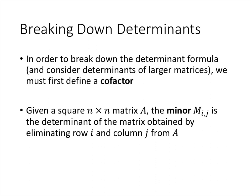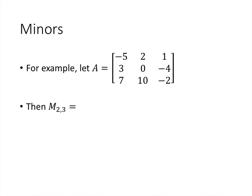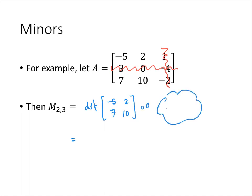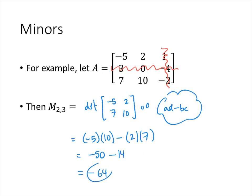To break this down and understand where the formula comes from, we must first define a cofactor. And before we can define a cofactor, we need to talk about what's called a minor of a matrix. Given a square matrix, the minor M sub i,j is the determinant of the matrix that we get by eliminating row i and column j from matrix A. For example, the minor M sub 2,3 means we eliminate row 2 and column 3, and find the determinant of what's left — in this case the determinant of the 2x2 matrix with entries negative 5, 2, 7, 10. Using AD minus BC, that's negative 50 minus 14, which equals negative 64. That's the minor — it's not the determinant, but we're going to use minors to figure out the determinant.